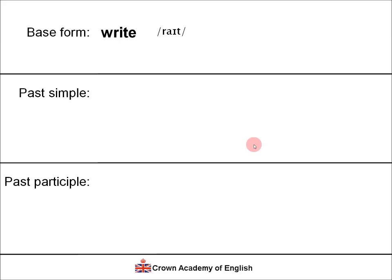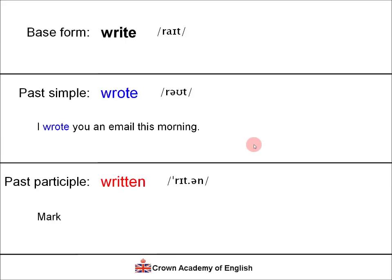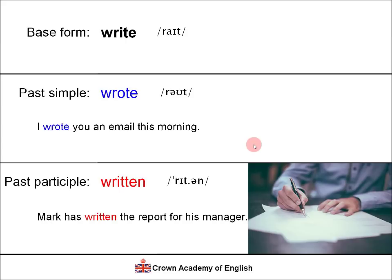The verb 'write'. Past simple: 'wrote'. Example: 'I wrote you an email this morning.' Past participle: 'written'. Example: 'Mark has written the report for his manager.' Notice that in all of these, the letter W is silent — we do not pronounce the letter W. 'Write', 'wrote', 'written'.